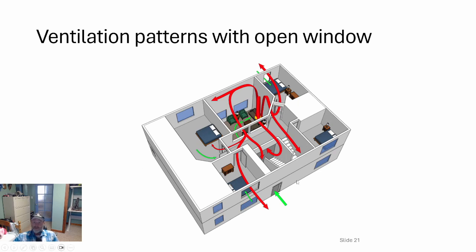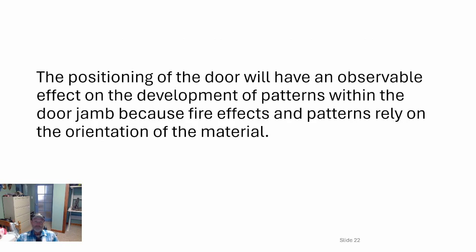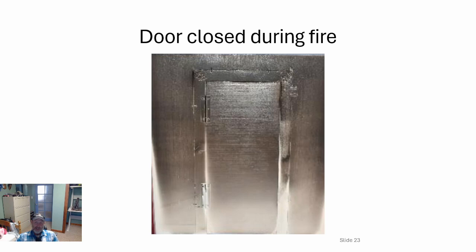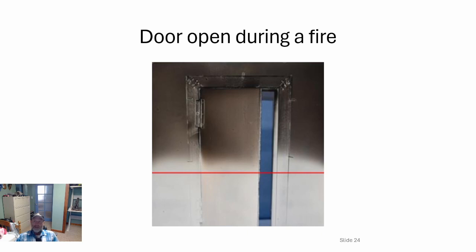Here's what the isometric view of the UL two-story geometry looks like. The positioning of the door will have an observable effect on the development of patterns within the door jamb because fire effects and patterns rely on the orientation of the material. Sometimes it's necessary to analyze a fire and try to determine if the door was open or not. This scale model of a compartment test burned kerosene and demonstrates the gradient associated with soot deposition — door shut versus door open. You can clearly see a line of demarcation that separates the upper smoke layer from the lower one. At 45 degrees open, you'd see an angled deposition.